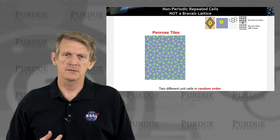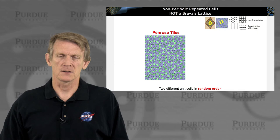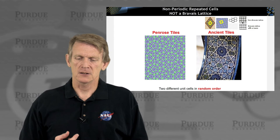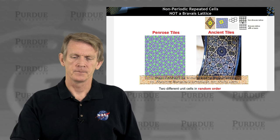And it can't be represented by a Bravais lattice because you can't find a single unit cell with a single basis vector that you can address every element in that large crystal with just an integer number. Another fancy example from art here is ancient tiles that use repeated cells, but they are random in order, and they can't be represented as a Bravais lattice either.